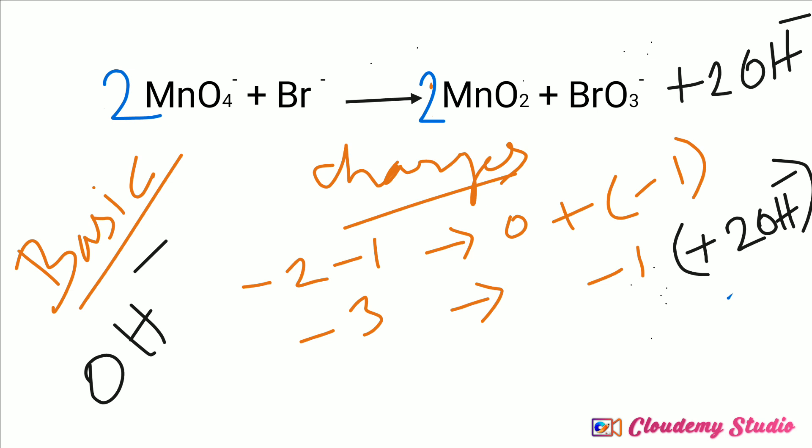When we add 2 OH⁻ to the right-hand side, the left-hand side has no hydrogen atoms but the right-hand side now has 2 hydrogen atoms. To balance hydrogen atoms, we add one water molecule to the left-hand side. Now all atoms on both sides are equal and the equation is balanced. The final balanced net ionic equation is: H₂O + 2 MnO₄⁻ + Br⁻ → 2 MnO₂ + BrO₃⁻ + 2 OH⁻.